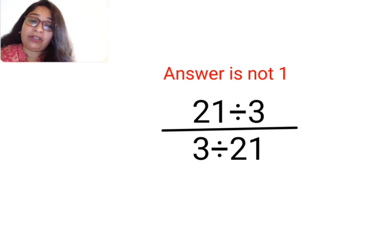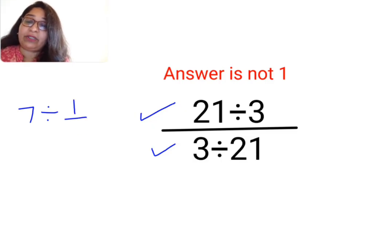See you should always do the numerator separately and the denominator separately. So 21 divided by 3 is 7 divided by 3 upon 21 is basically 1 upon 7.